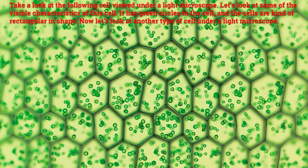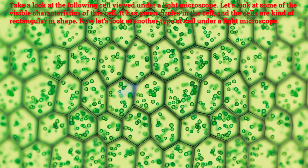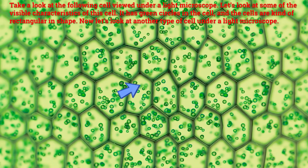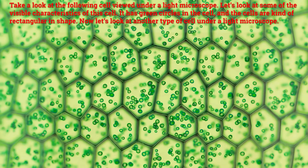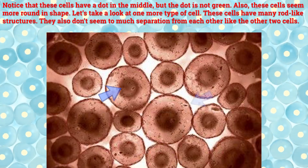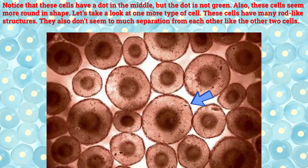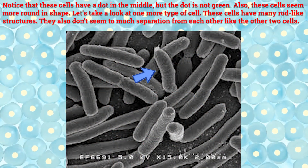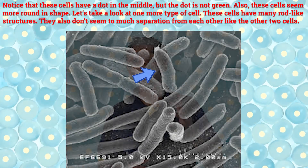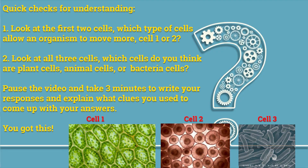Now let's review some of the images produced by light microscopes. Take a look at the following cell viewed under a light microscope. It has green circles in the cell and the cells are kind of rectangular in shape. Now let's look at another type of cell — notice that these cells have a dot in the middle, but the dot is not green, and these cells seem to be more round in shape. Let's take a look at one more type: these cells have many rod-like structures and don't seem to have much separation from each other.